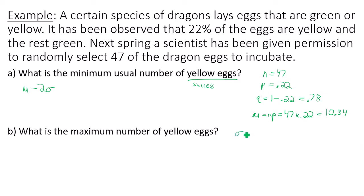Standard deviation is square root times n times P times Q. That is square root of 47 times 0.22 times 0.78. That gives you square root of 8.0652, which is 2.84. That is my standard deviation.